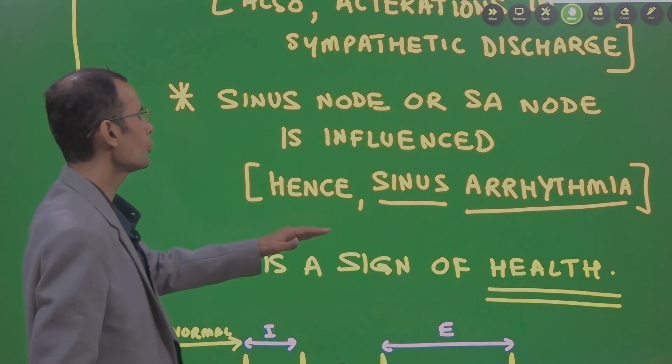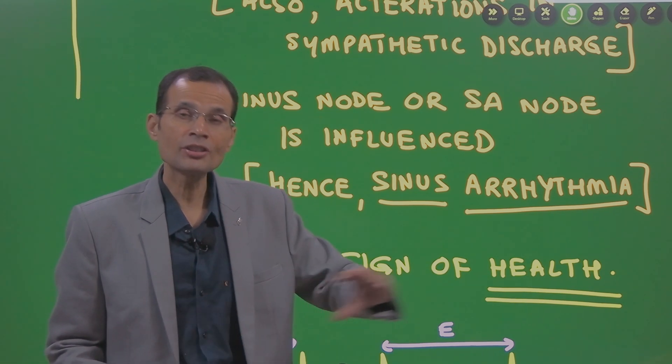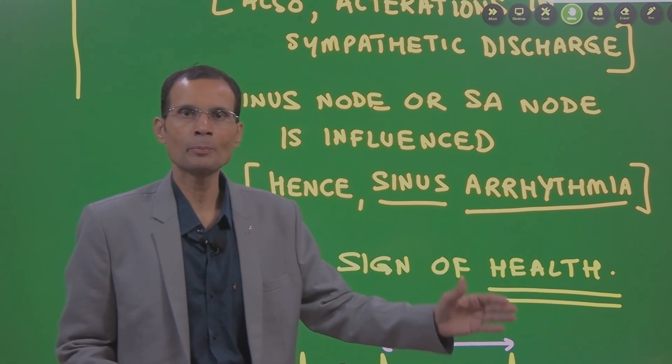So, sinus node or SA node is influenced by these changes in the sympathetic and parasympathetic outflows.